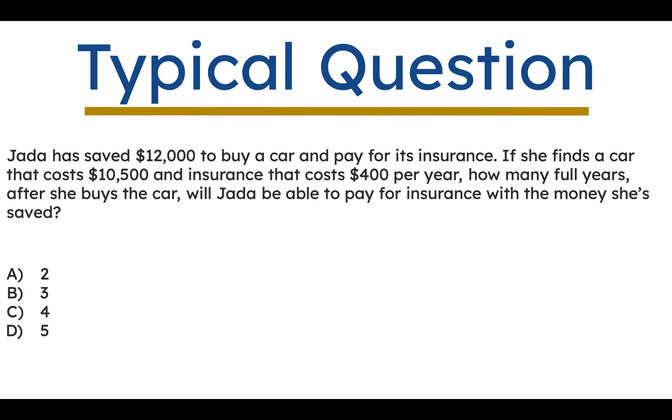This is an algebra question. It might not look like it, but it's that pigs in a blanket, corndog sort of thing, where they've snuck the math inside of this word problem. So we know that Jada has $12,000, and she's got $10,500 that's going to be eaten up by the car. And the question is, how many years will she have covered insurance-wise? So the first thing we need to do is figure out how much she's going to have left over from the insurance, from the purchase of the car, excuse me. So we have $12,000 to start with. We spend that much on a car. The difference, subtraction problem, is $1,500. So she's got $1,500 to spend on insurance. Okay.